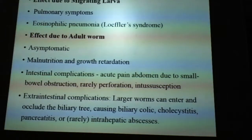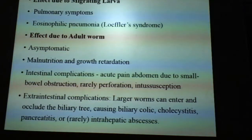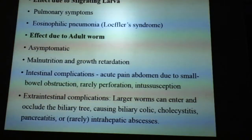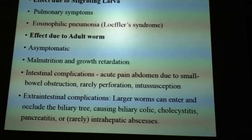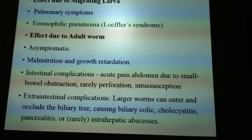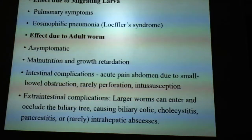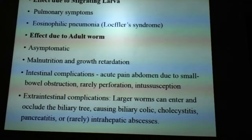Regarding effects due to the adult worm, there will be direct effects. Usually they will be asymptomatic, but they may cause malnutrition and growth retardation. Intestinal complications include acute abdominal pain due to small bowel obstruction; rarely it may turn into perforation and intussusception. Extra-intestinal complications occur as the worm migrates to other systems — larger worms can enter and occlude the biliary tree causing biliary colic, cholecystitis, pancreatitis, or rarely intra-hepatic abscesses.